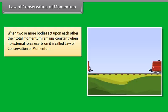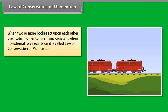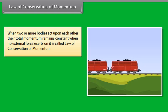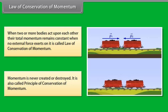When two or more bodies act upon each other, their total momentum remains constant when no external force exerts on it. This is called law of conservation of momentum. Momentum is never created or destroyed. It is also called principle of conservation of momentum.